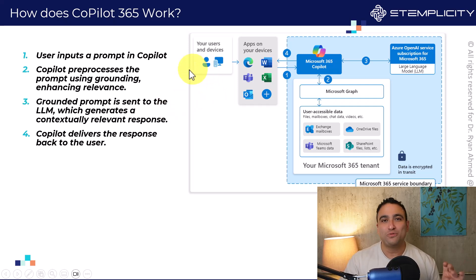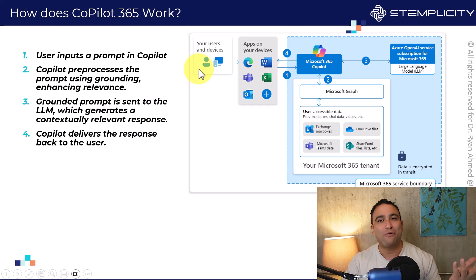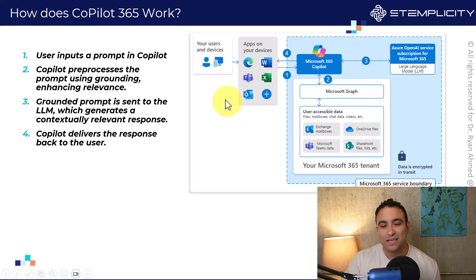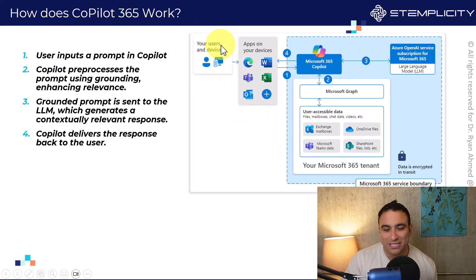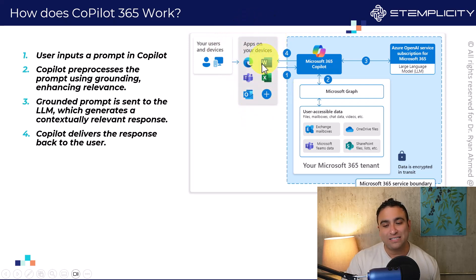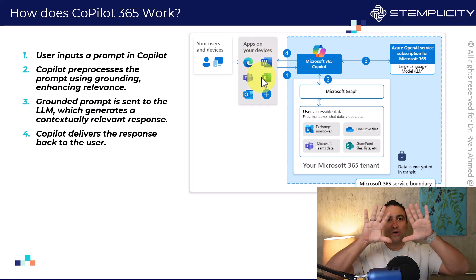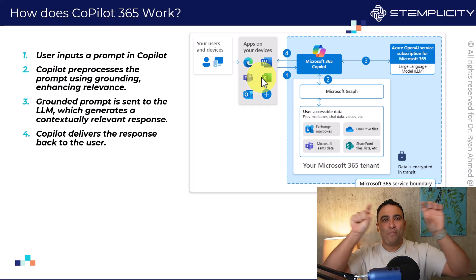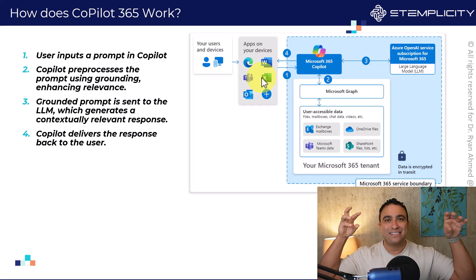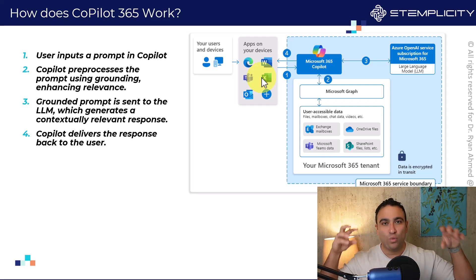Let's assume that you are a user of one of the Microsoft apps, like Microsoft PowerPoint or Microsoft Word, as an example. Here you have a user, like me or you. Here you have all the apps on your devices. Let's stick with Microsoft Word. So what the user is going to do is open Microsoft Word, and you're going to have Copilot integrated inside the Word document.